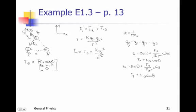And I can do the same thing — I can break it into components. So if I draw my components, this is going to be my fx here, and this is going to be my f1,2. So my x component is going to be f1,2 cosine theta, using this theta right here. And my y is going to be f1,2 sine theta. My z is still going to be 0. My x is to the left and my y is down, so that tells me both of these are going to be negative.